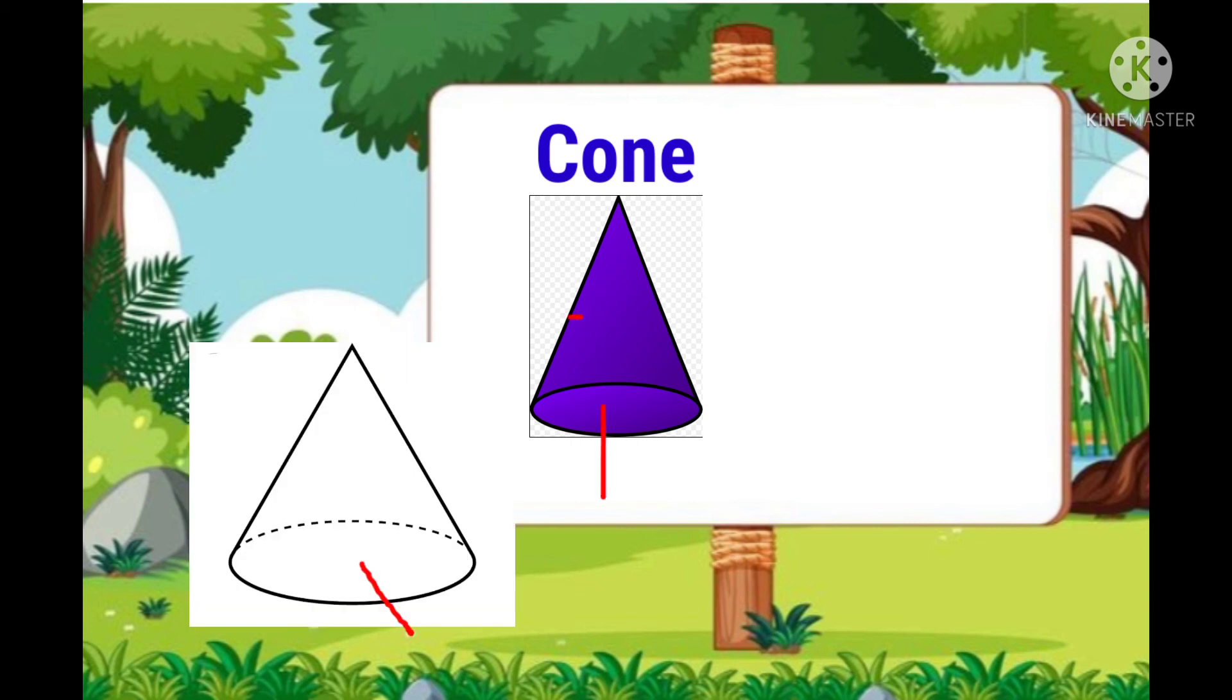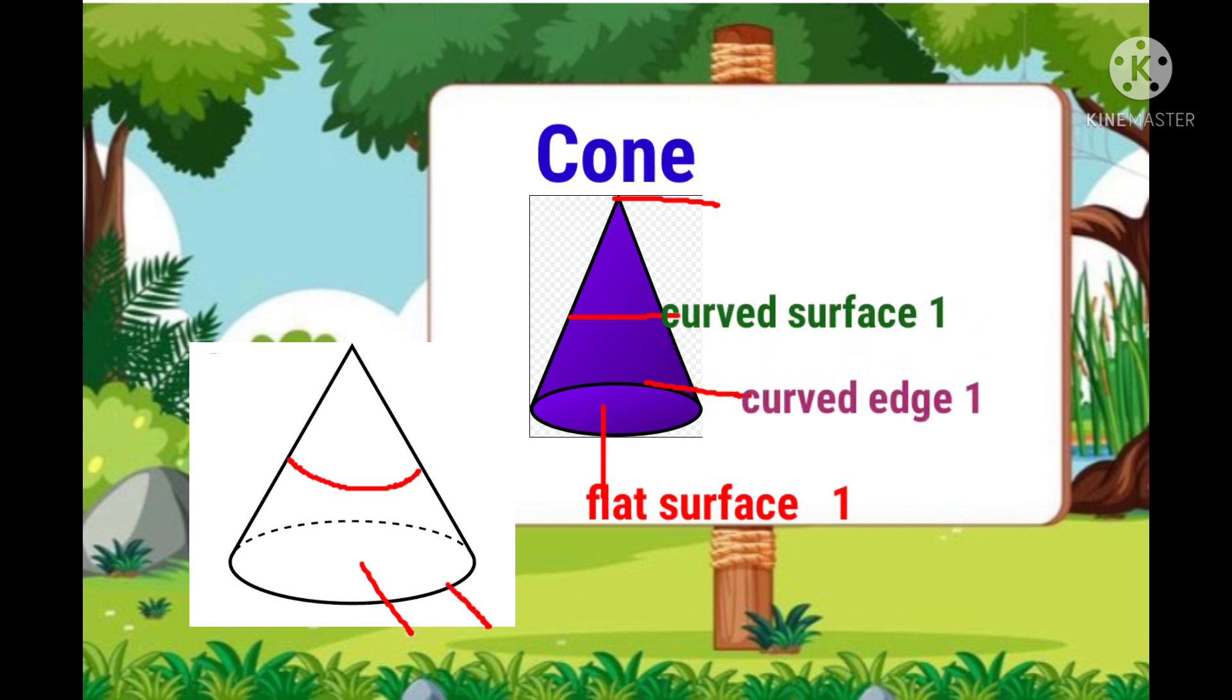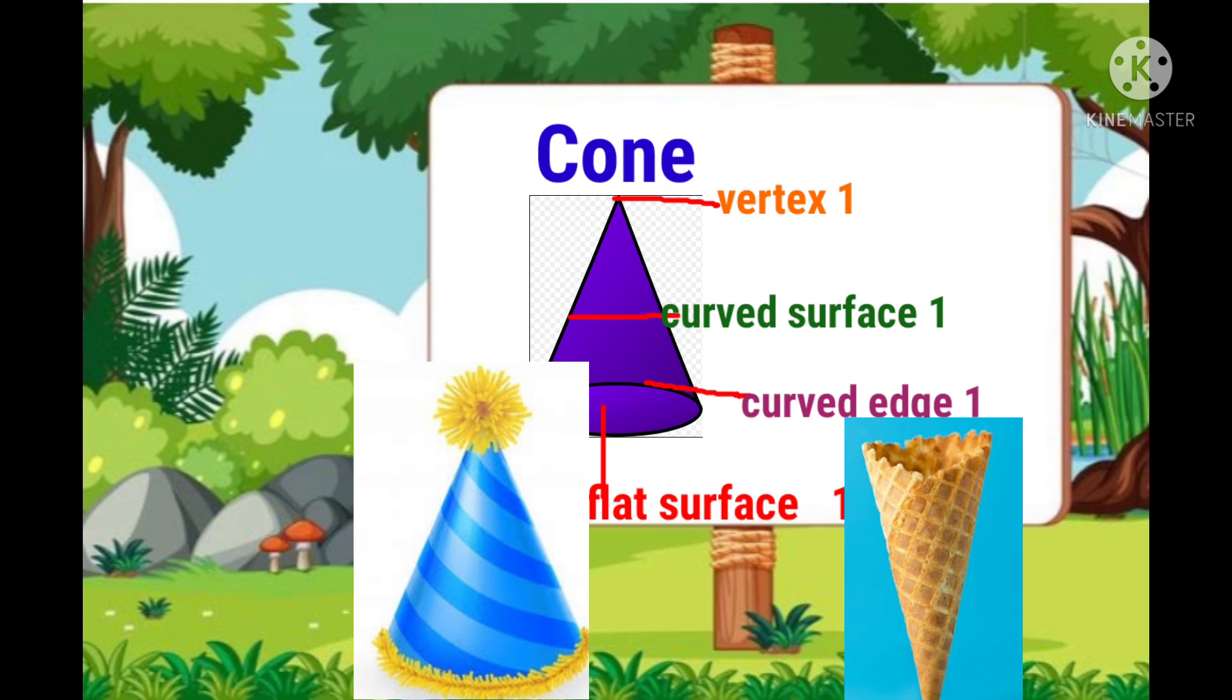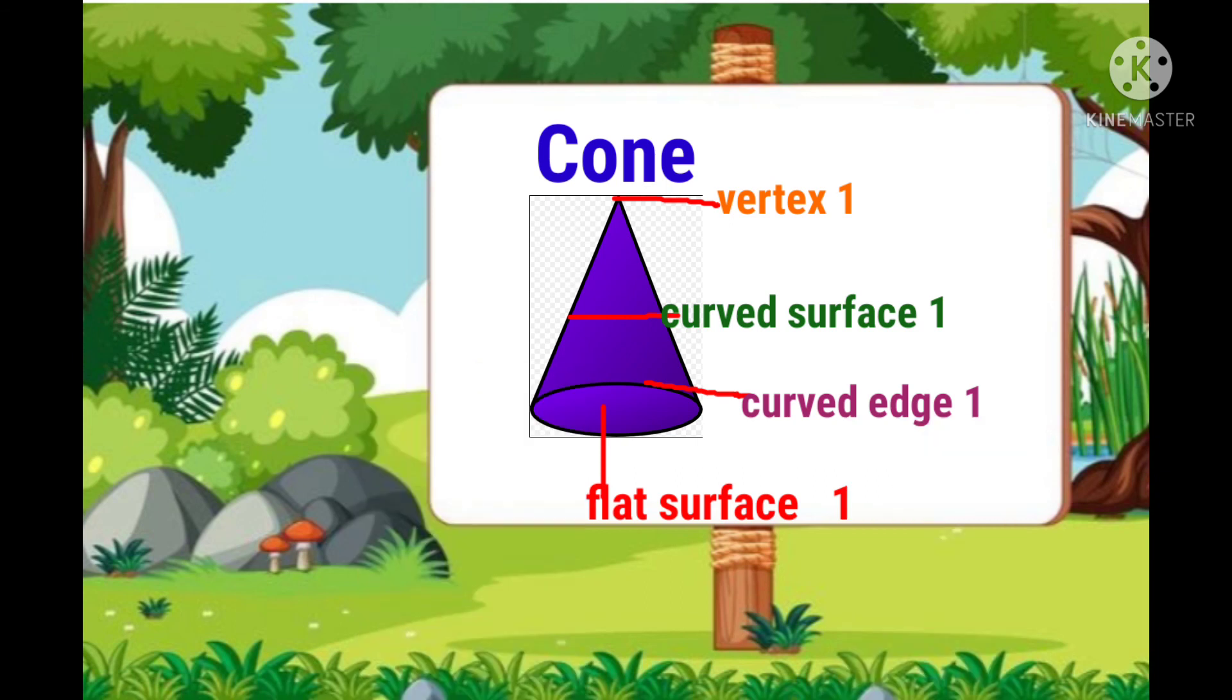A cone has 1 flat surface, 1 curved surface, 1 curved edge and 1 vertex. Bird cap and ice cream cone are the examples of cone.